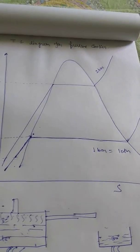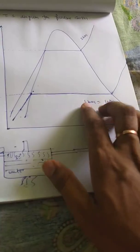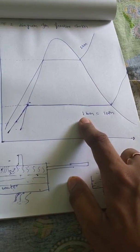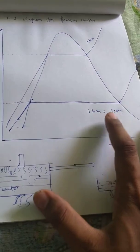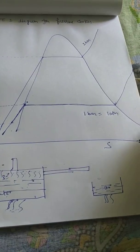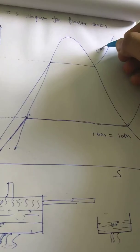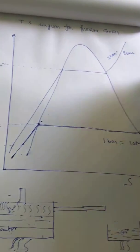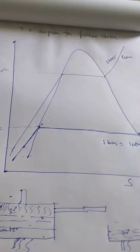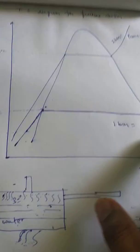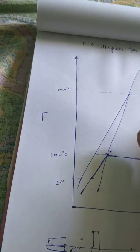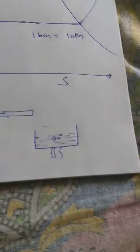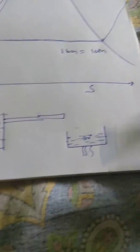Today we will try to draw the TS diagram for the pressure cooker. I have already drawn the TS diagram and taken two constant pressure lines — one at 1 bar pressure and another at 2 bar pressure. 1 bar is atmospheric pressure and 2 bar is the pressure cooker pressure, since pressure cookers generally work at 2 bar. The saturation temperature at 1 bar is 100°C and at 2 bar is 120°C.